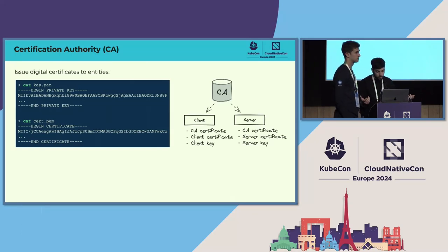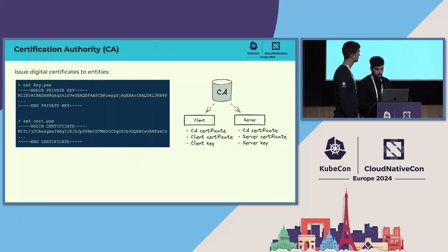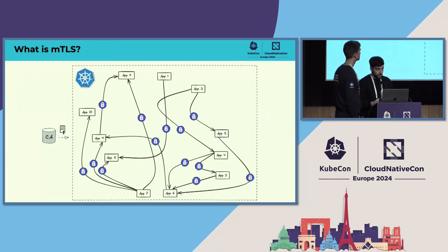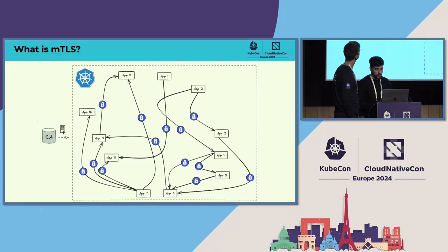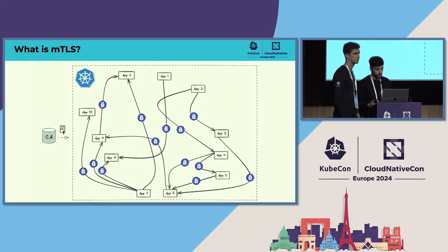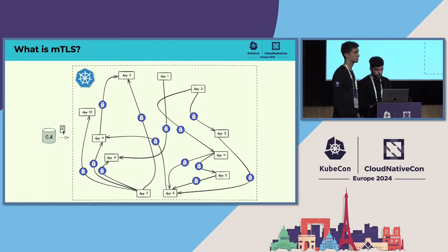With MTLS, you can define policies and restrict access to your server only to specific clients. In order to use MTLS, you need to generate a client certificate and a key for both the client and the server. This is simple if you only have two apps. But in enterprise Kubernetes environments, things are really dynamic — pods are recreated very often. So in order to handle the certificates, you have to use some kind of tool because it's impossible to handle this manually.